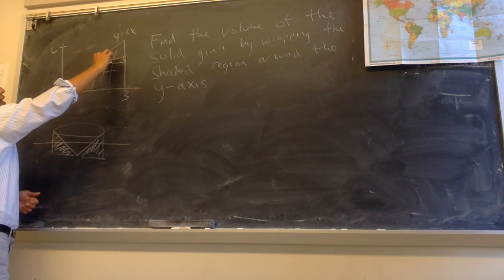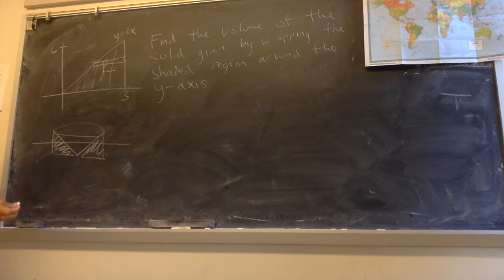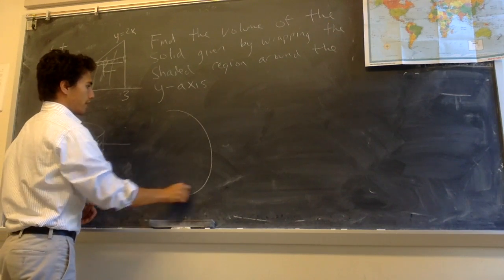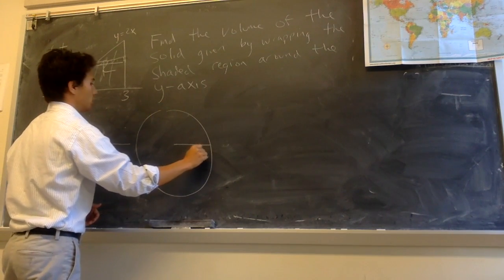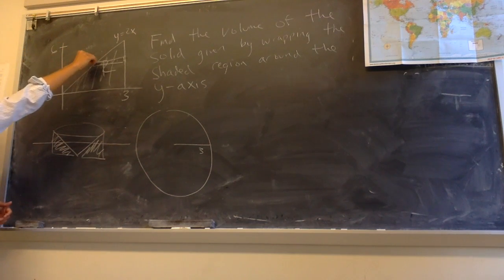So what happens when I take a line segment like this and I wrap it around the y-axis is I get this piece wrapped around the y-axis gives you a circle of radius 3.